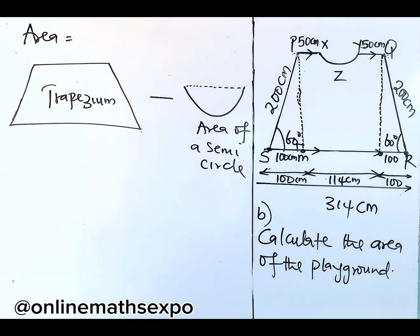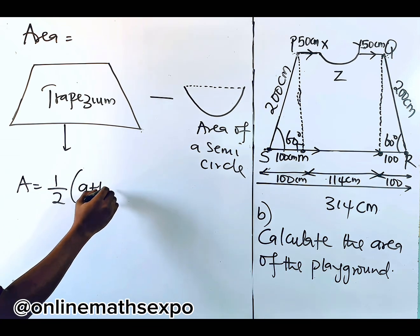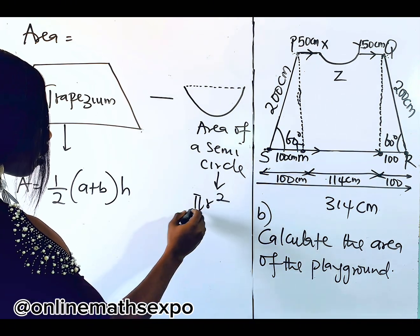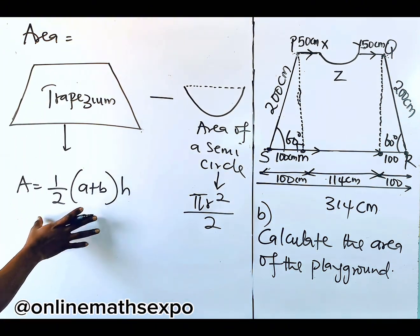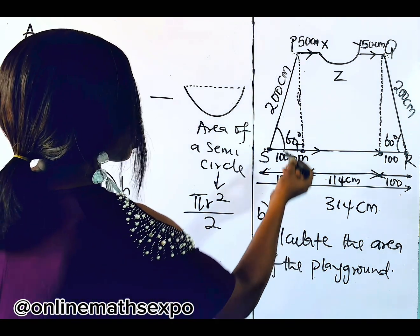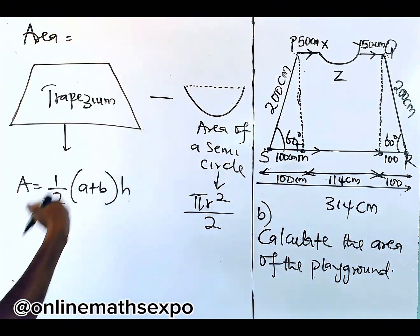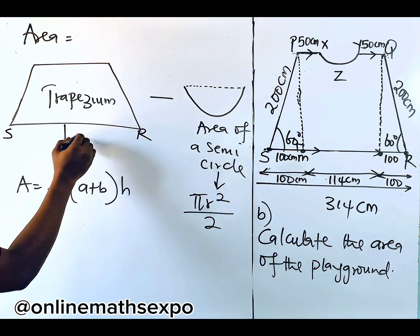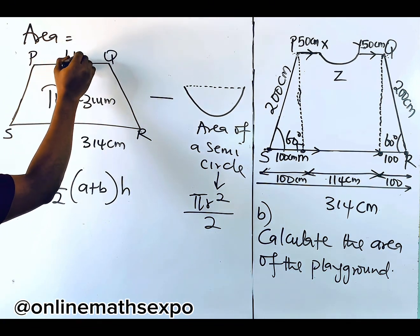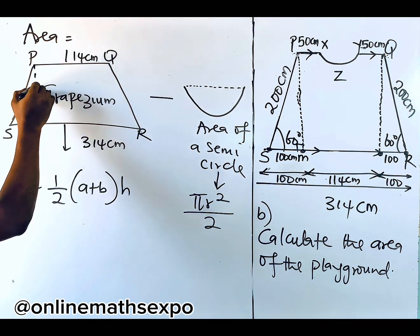How do we calculate the area of a trapezium? The area of a trapezium is: half times (a + b) multiplied by the height. And the area of a semi-circle is πr² divided by 2. The whole length from here to here is 314, and from this point to this point is 114. So from here to here SR is 314 centimeters, and PQ is 114 centimeters. But we need to know the height of this trapezium.